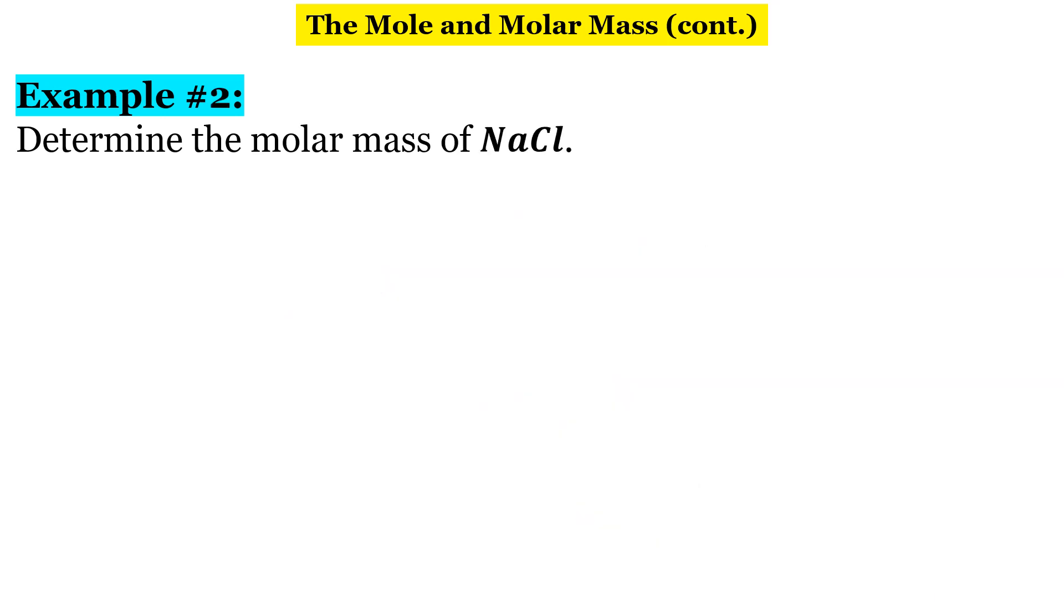All right, for this example, it says, determine the molar mass of NaCl, which is sodium chloride. So, obviously, we can't just go to the periodic table and look up sodium chloride, because that's a compound. It's made up of two different elements.